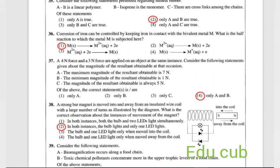Question 36: corrosion of iron can be controlled by keeping iron in contact with bivalent metal M. What is the half reaction in which the metal M is subjected here? Answer is the first one.